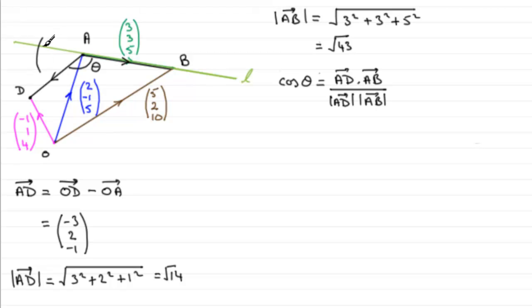Now if we put the vector A to D up here, we'll just add it to the diagram, we've got minus 3 and then 2 minus 1. So cos theta equals AD dotted with AB. Now to dot two vectors together, what we do is we just multiply the i components together, add it to the j components multiplied together, and then add it to the k components multiplied together.